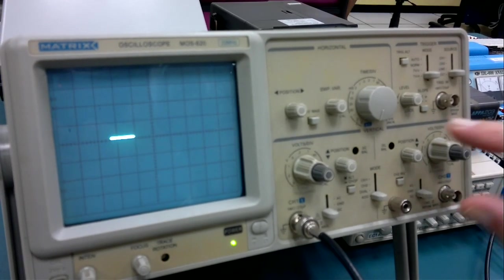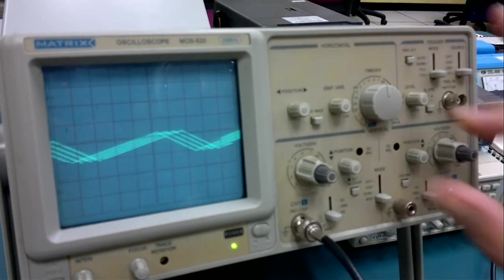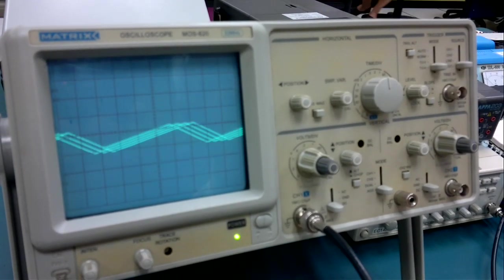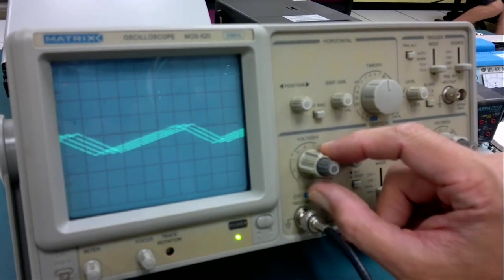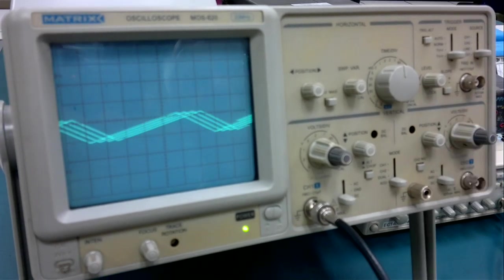Now, let's just see what else we've got. There's a time per division control, put that in the center. Ah, now we're getting something, but it's all over the place. Don't worry about it, don't panic. We've got volts per division control, yeah, somewhere in the center. This one, somewhere in the center, lovely.